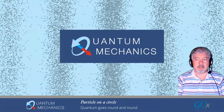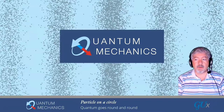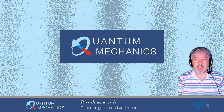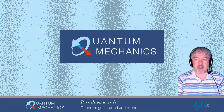Welcome to Quantum Mechanics. This is Module 6, Lecture 1. We're going to solve the quantum mechanics problem of a particle on a circle, and it's subtitled Quantum Goes Round and Round.